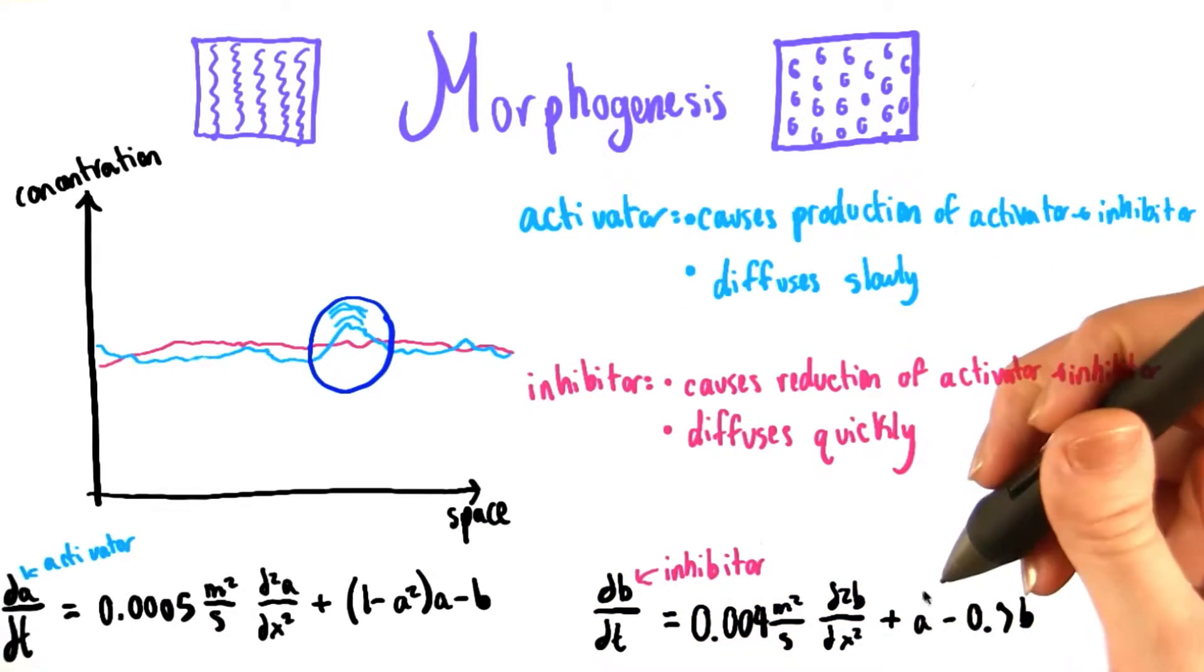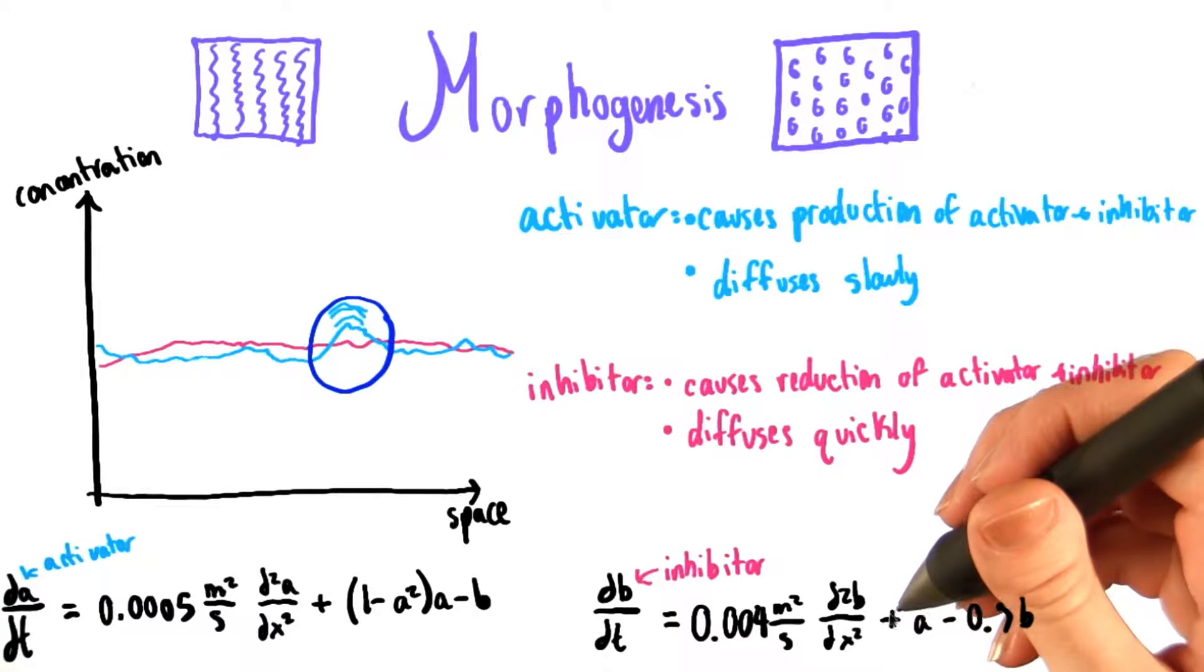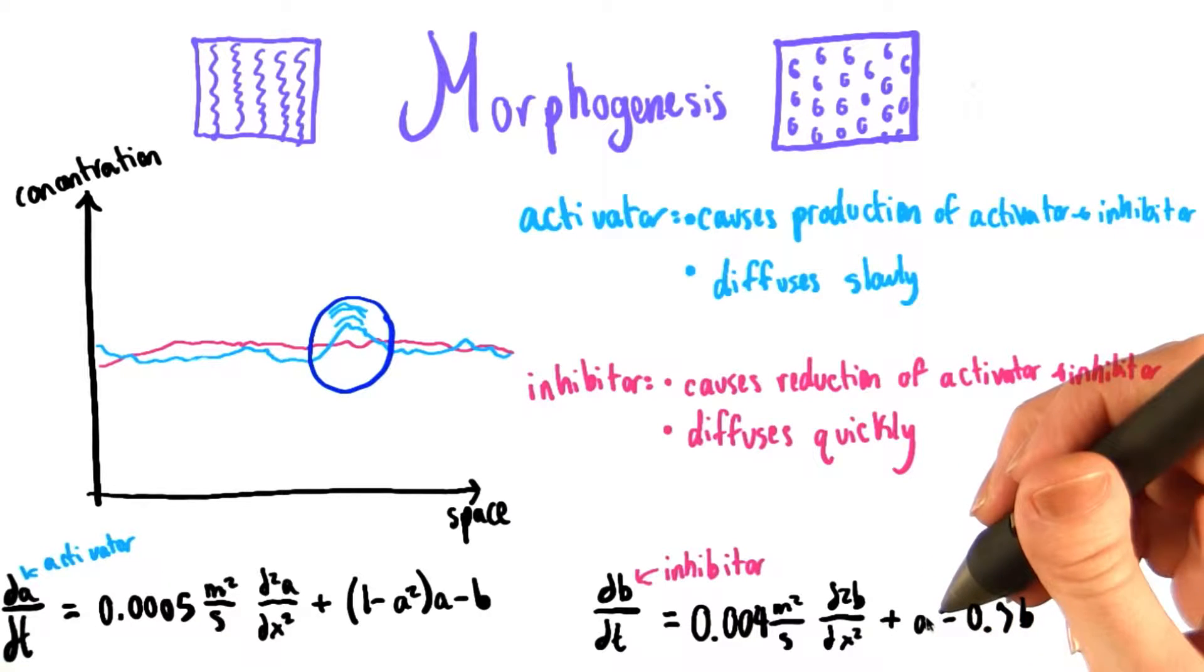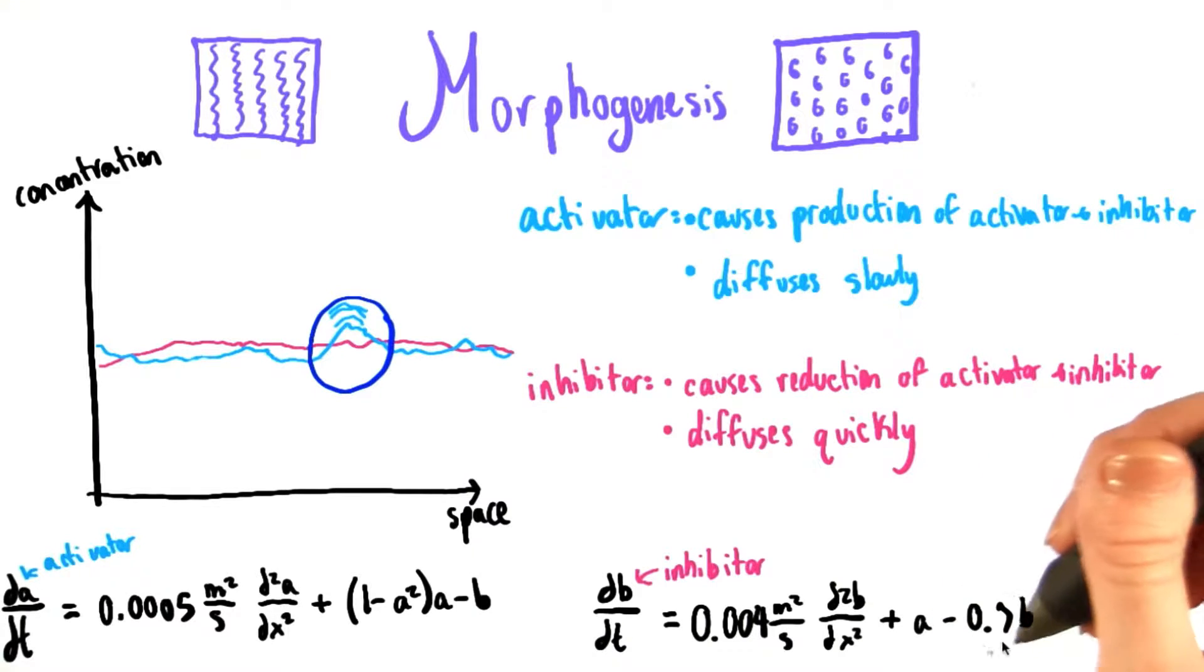Back in the equation for dB/dt, we see that when A is greater than 0, since a term of just plus A is added in, this forces both A and B upward. Since we have minus 0.7B, however, whenever B is greater than 0, this forces A and B both downward.